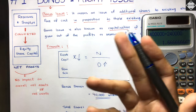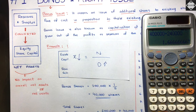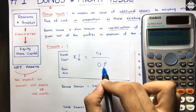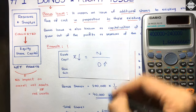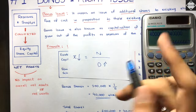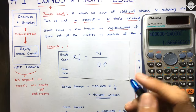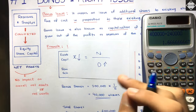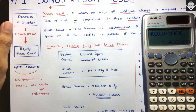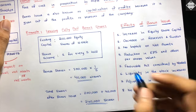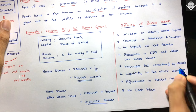EPS falls because the denominator increases while the numerator (earnings) stays the same. For EPS to increase, the numerator should increase and denominator decrease. But here earnings are unchanged and number of shares has increased due to bonus issue, so EPS will naturally fall.